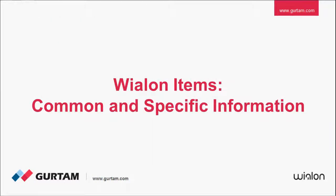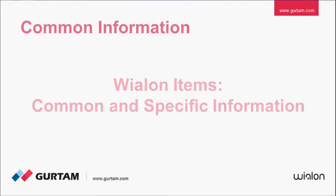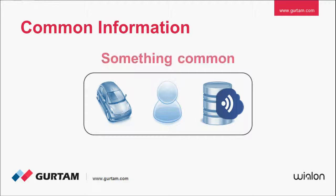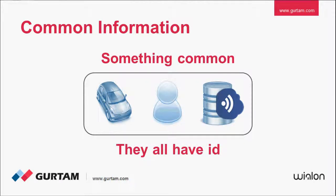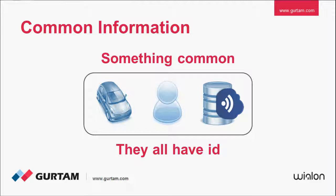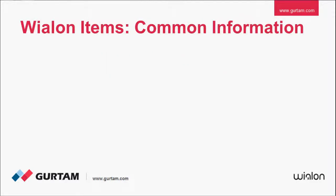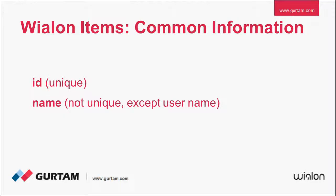Every Wialon item contains common information, which is the same for all item entries, and specific information, which serves to distinguish between them. All Wialon items have an ID — a unique integer identification value by which items differ from one another. As regards item names, all items have this property, but unlike ID, it need not necessarily be unique.